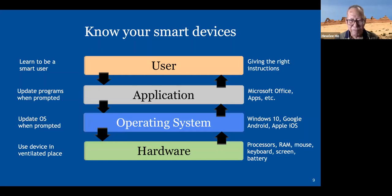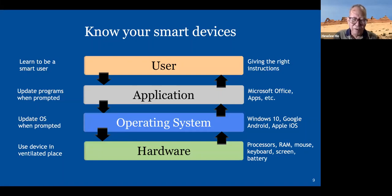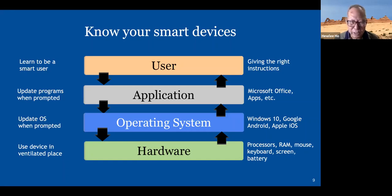Any smart device normally has these four sections. First is the user — the user must know how to give the right instruction to the smart device, so if you don't know, you learn. Application is what you request the smart device to do for you. It can be a simple calculation using a calculator or a word document doing some report writing. So this also you have to learn.